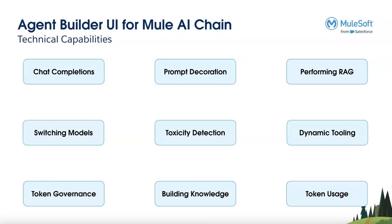We are going to talk about chat completions, switching between models, and if you are building your agents what is possible — the parameterization aspect. Token governance is important, prompt decoration, toxicity detection on input and output of the LLM, how you can build knowledge and perform RAG, dynamic tooling, and token usage.